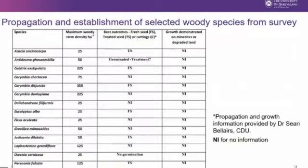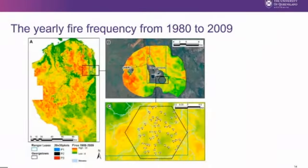Exploring that data further, we looked at the woody species list to assess how much we knew — had they actually been germinated, what was the best way to grow them, and has their growth been demonstrated on degraded lands. For a large proportion, there's limited knowledge of how to actually grow them, even though there are some well-known genera there — they're not always easy to collect. So there are definitely gaps in our knowledge of species that are common and in reasonable abundance, as to how they might perform on mine sites. Sean Belair helped us with that.